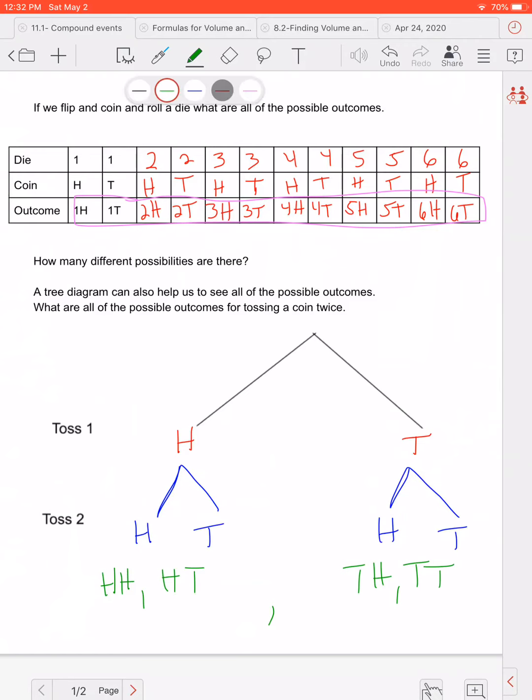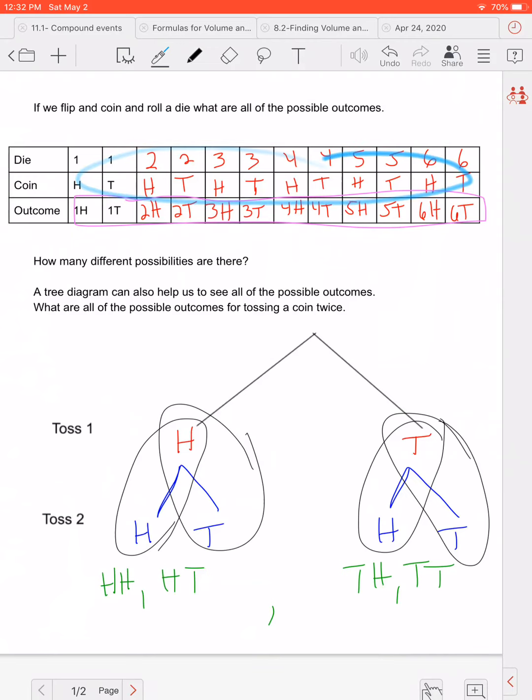Okay so again all I did here was I combined this and this for these two options and this and this for my second two options. So a tree diagram can really help you organize that information just like our little chart did here. Okay but a lot of times when it's two events that are exactly the same, a tree diagram is really helpful so you don't confuse yourself and think oh I already have a head, don't worry about it. But when there's two separate events like a die and a coin, a chart can help just as well. But you can still use a tree diagram.